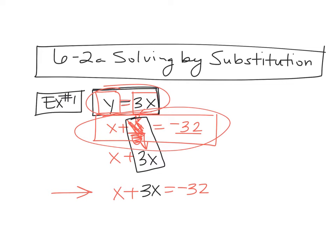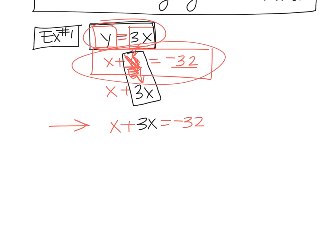Now we can solve this equation. What's X plus 3X? 4X. So 4X equals negative 32. What do I do to solve that? You divide. So X is negative 8. So that's our X value. But when we solved these, when we graphed, we always got a point. So we need to know what the Y value is also.